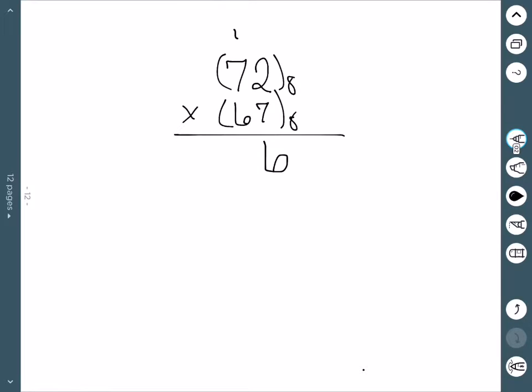7 times 7 is 49 plus 1 is 50. How many times does 8 go into 50? Well, it goes in there 6 times with the remainder of 2. Now we can bring down the 6.